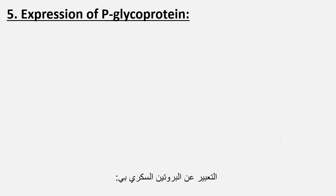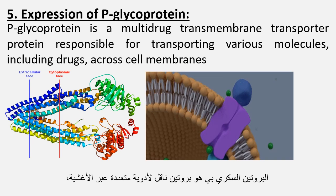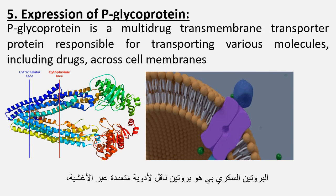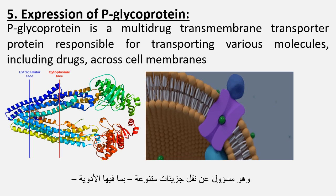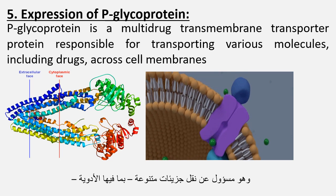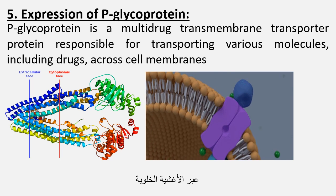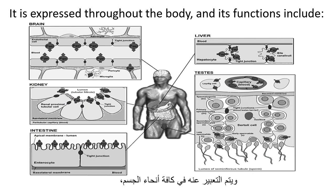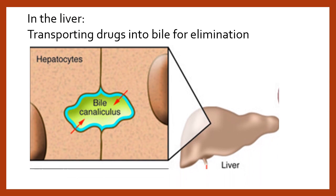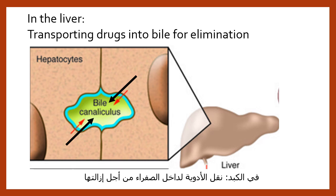Expression of P-glycoprotein. P-glycoprotein is a multi-drug transmembrane transporter protein responsible for transporting various molecules, including drugs, across cell membranes. It is expressed throughout the body. In the liver, it functions by transporting drugs into bile for elimination.